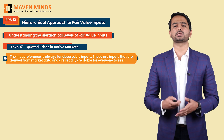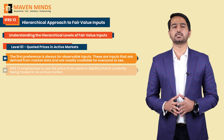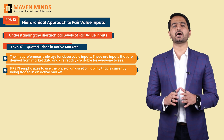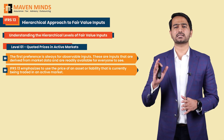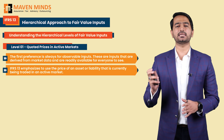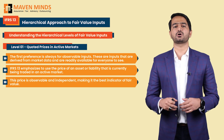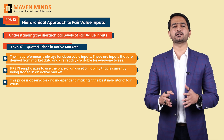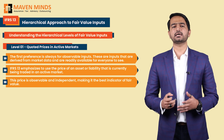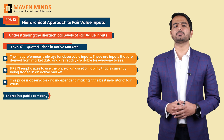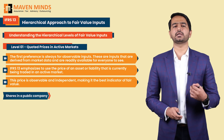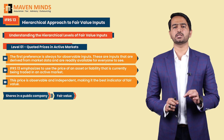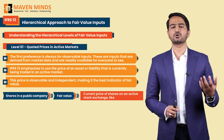Observable inputs are readily available for everyone to see. IFRS 13 emphasizes that whenever possible, you should use the price of an asset or liability that is currently being traded in the active market. This price is observable and independent, making it the best indicator of fair value. For example, if you own shares in a public company and need to calculate their fair value, the simplest method is to look up the current price.